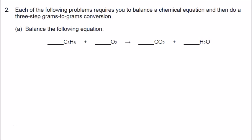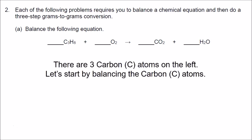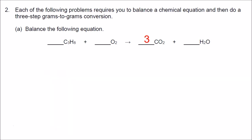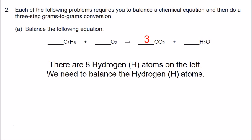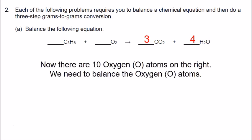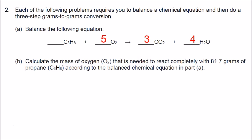Number 2: each of the following problems requires you to balance a chemical equation and then do a 3-step grams-to-grams conversion. Part A: balance this equation. There are 3 carbon atoms on the left, so we put a 3 in front of CO2. There are 8 hydrogen atoms on the left, so we put a 4 in front of H2O. That gives 10 oxygen atoms on the right, so we put a 5 in front of O2. The equation is balanced.